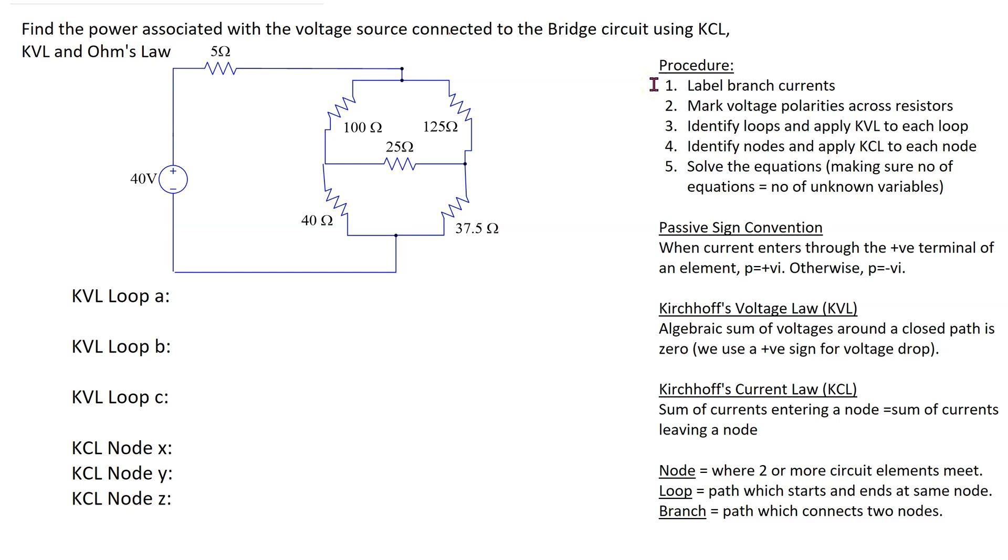The first step is to label branch currents. Recall that a branch is a path which connects two nodes. For this bridge circuit, the 40 volt independent voltage source and the 5 ohm resistor are in series. They carry the same current, thus we can label this branch current as I1. We can label this branch current as I2 and this branch current as I3.